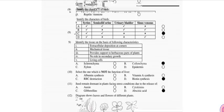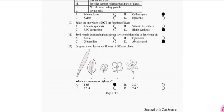Identify the tissue on the basis of following characteristics. So that is option B: collenchyma tissue. Select the one which is not the function of liver. So that is storage of biotin vitamin. Seeds remain dormant in plants facing stress condition due to release of abscisic acid.